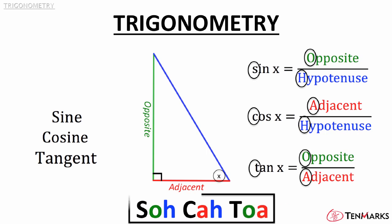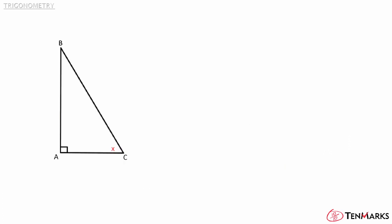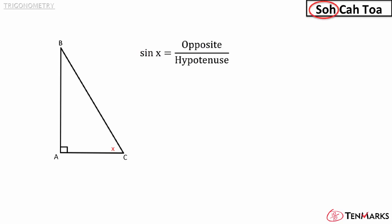Let's try a couple of problems. In the following triangle, what is the sine of angle x? Referring back to SOH-CAH-TOA, the sine is the opposite over the hypotenuse. In this triangle, the opposite side is BA and the hypotenuse is BC. So the sine of x is BA over BC.